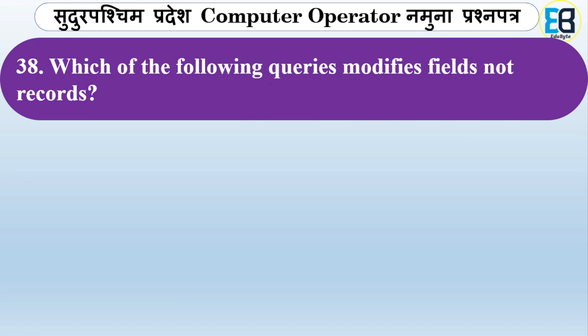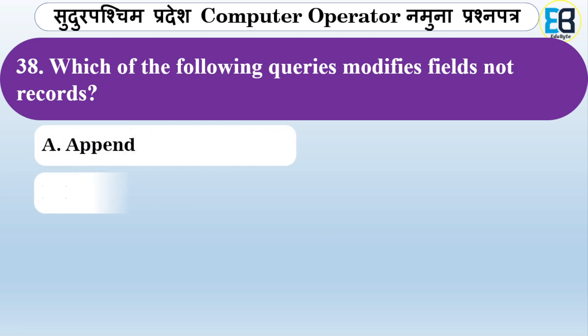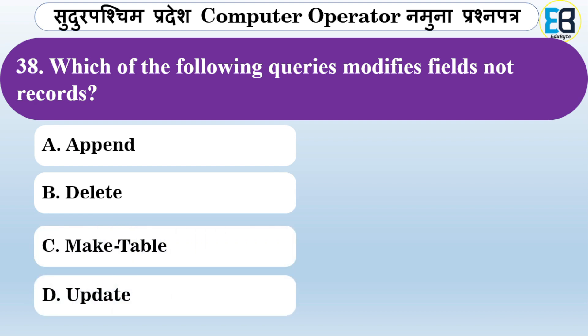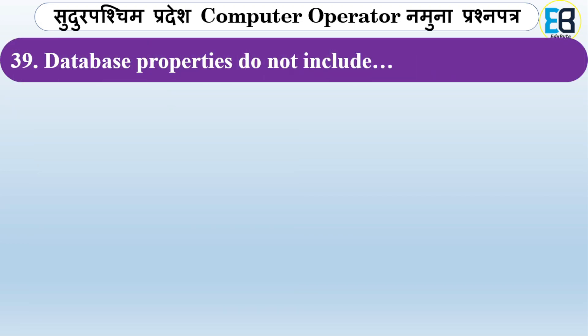Which query type modifies records like a field? Options are Append, Delete, Make Table, or Update. The correct answer is Update — an Update query is used to modify records in a field.